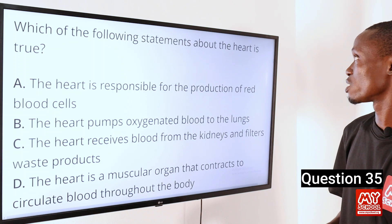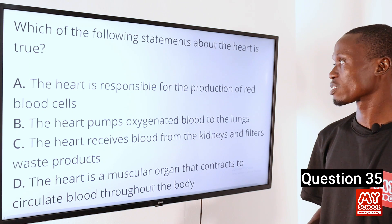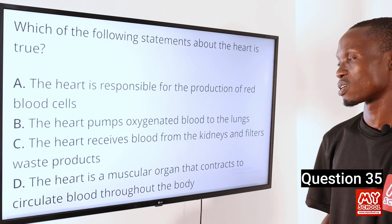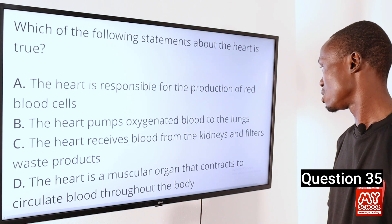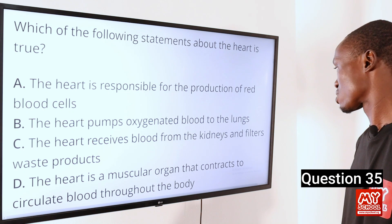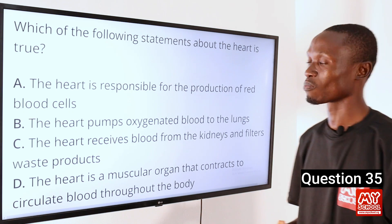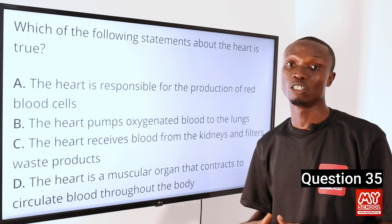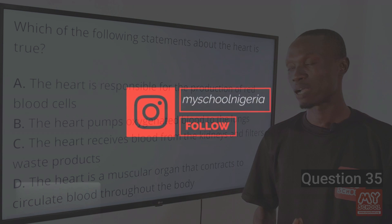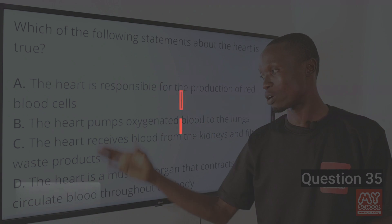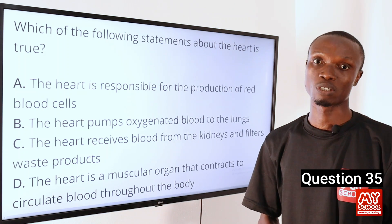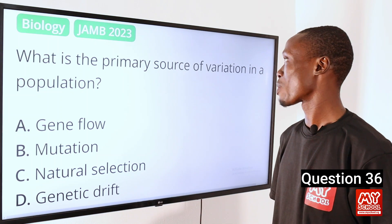Carrying capacity describes the maximum number of individuals of a species that an environment can support indefinitely. It represents the balance between the available resources in an environment and the population's demand for those resources. So option C is the correct option. Question 35. Which of the following statements about the heart is true? A. The heart is responsible for the production of red blood cells. B. The heart pumps oxygenated blood to the lungs. C. The heart receives blood from the kidney and filters waste products. D. The heart is a muscular organ that contracts to circulate blood throughout the body.